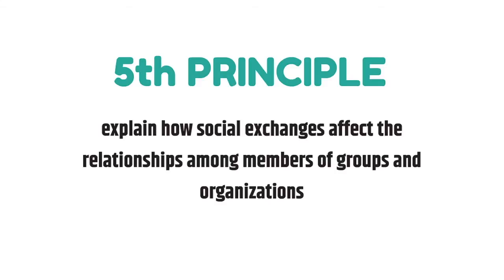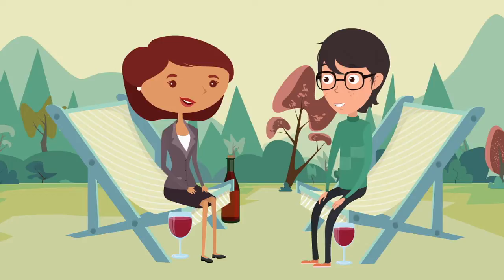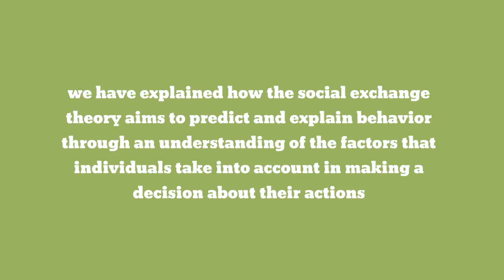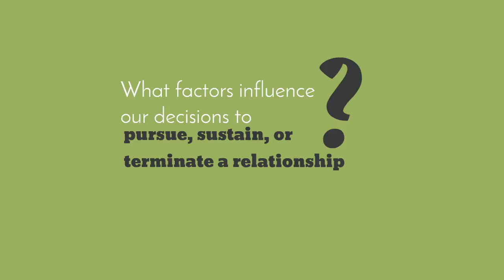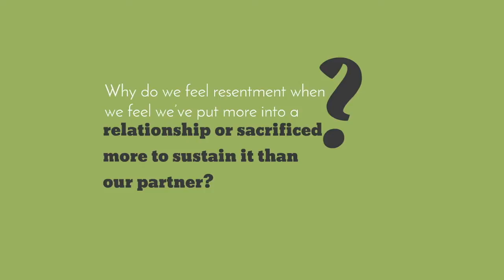The fifth principle aims to explain how social exchange affects relationships among members of groups and organizations. Blau explained that the need for help or advice is what leads to social interaction among groups and organizations. An example of this principle is Philip and Sam becoming friends outside of work. In brief, the social exchange theory aims to predict and explain behavior through an understanding of the factors that individuals take into account when making decisions. Given this information, you should be able to use social exchange theory concepts to answer how we decide what we're willing to give up to gain something, what factors influence our decisions to pursue, sustain, or terminate a relationship, and why we feel resentment when we've put more into a relationship than our partner.